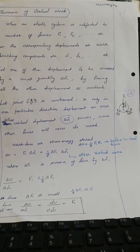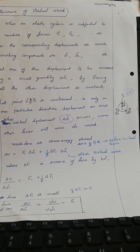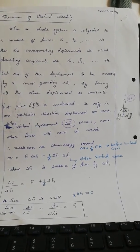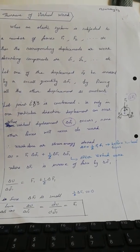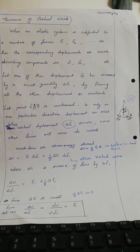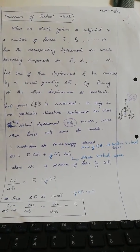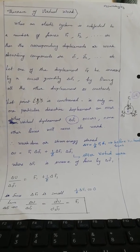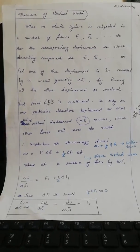So whenever a virtual displacement occurs with the help of the potential energy stored inside the body during the first work, a virtual work will also happen — because as per Hooke's law, every displacement is proportional to the force which produces it. Thank you.